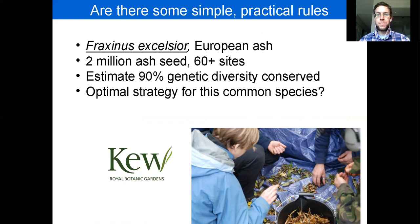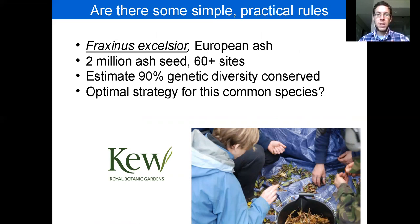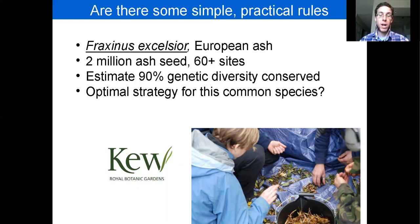Now I want to move scales a little bit. I'm going to talk about a common species: Fraxinus excelsior, European ash. As you probably know, this species is threatened by a fungal pathogen. As part of the UK Native Tree Seed Project led by Kew Gardens and the Millennium Seed Bank, a huge number of seeds have been collected across the UK range of Fraxinus excelsior. We estimate that Kew has conserved about 90% of the genetic diversity of this very common species. I was reflecting on how well the seed collectors have done, and I wanted to think about general practical rules that could be used for the future.